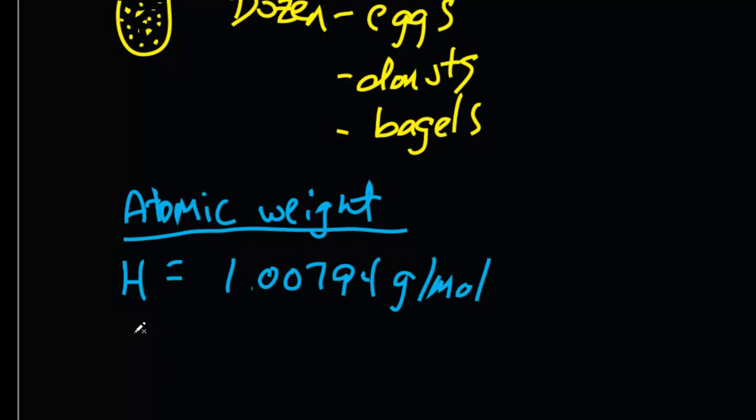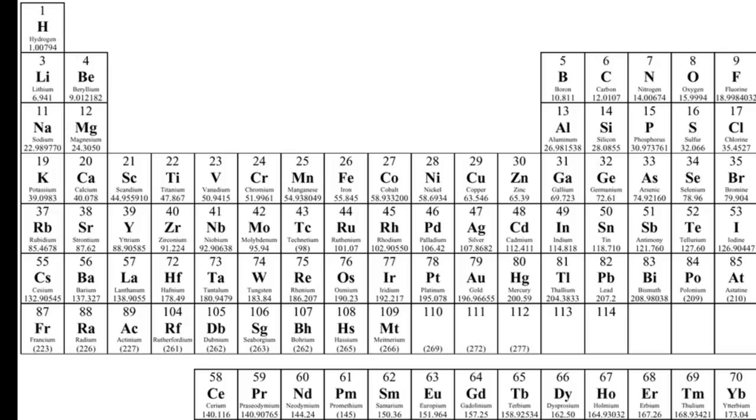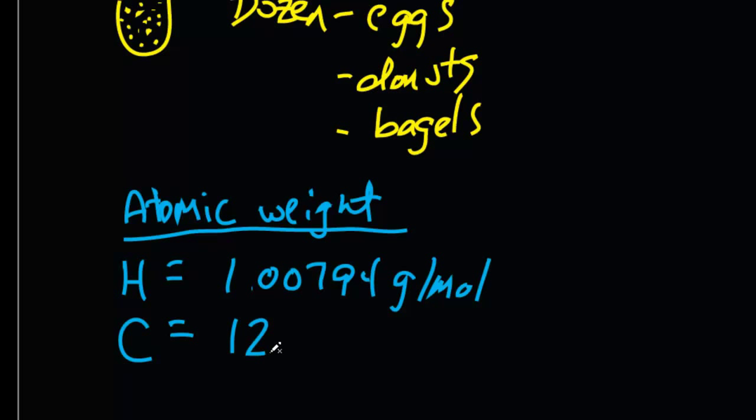Let's say I wanted the atomic weight of carbon. Well, just got to look at the periodic table. And the atomic weight of carbon is 12.0107 grams per mole. In other words, if I had one mole of each of these guys, that's how much it would actually weigh.